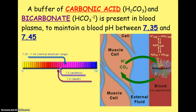One of our main buffer systems is the carbonic acid-bicarbonate system, and it helps to maintain our blood pH between 7.35 and 7.45. When you go below that, it's called acidosis. When you go above that, it's called alkalosis. Not far out of that range, you're going to have some serious medical consequences — that's what the article I gave you is about.